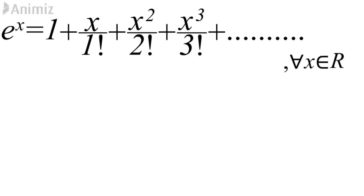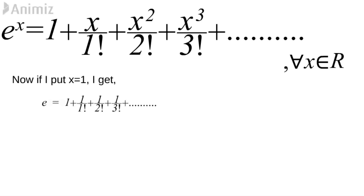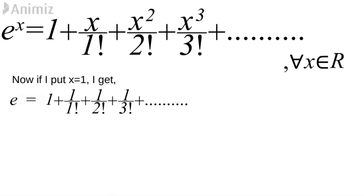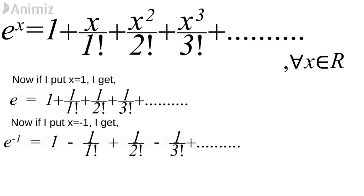Let us verify: putting x = 1, we get e = 1 + 1/1! + 1/2! + 1/3! + ..., and putting x = -1 we get e^(-1) = 1 - 1/1! + 1/2! - 1/3! + ... up to infinite terms. So we have derived the polynomial form and seen two examples.